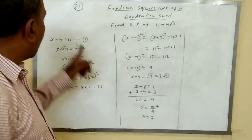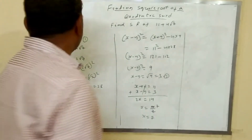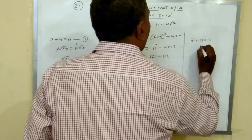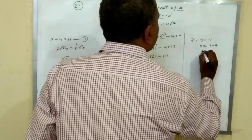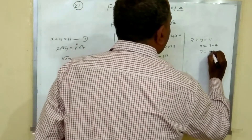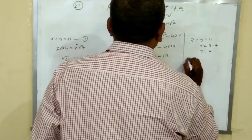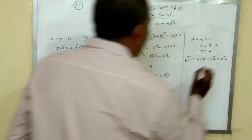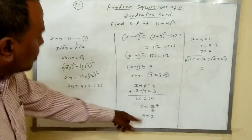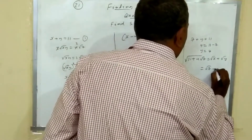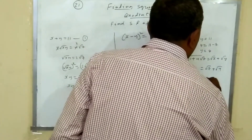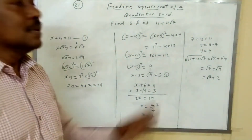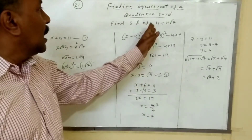Substituting x equals 7 into the first equation: 7 plus y equals 11, so y equals 4. We assumed square root of 11 plus 4 root 7 equals root x plus root y. With x equals 7 and y equals 4: root 7 plus root 4, and root 4 is 2, so the answer is root 7 plus 2.